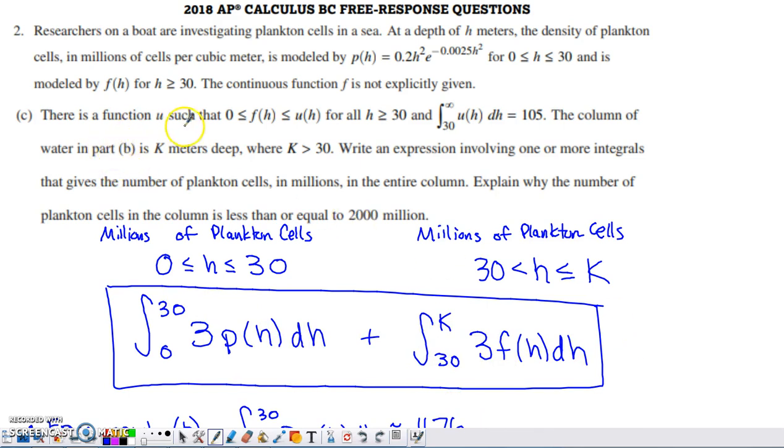Now let's go back and try to figure out what that opening sentence is going to be good for. So it tells us that 0 is less than or equal to f of h, and that's our new density function that holds for depths of water above 30.